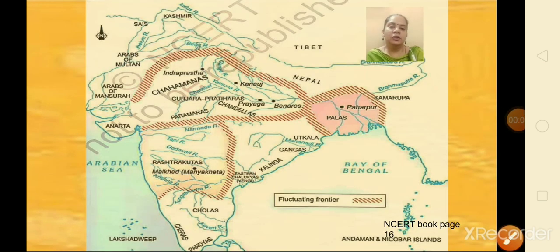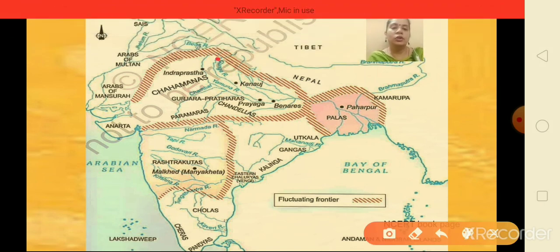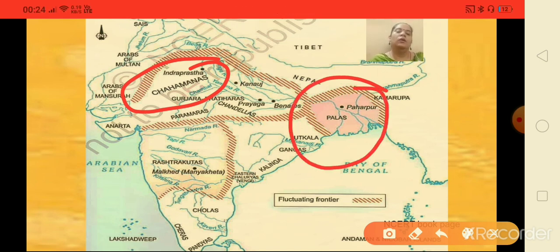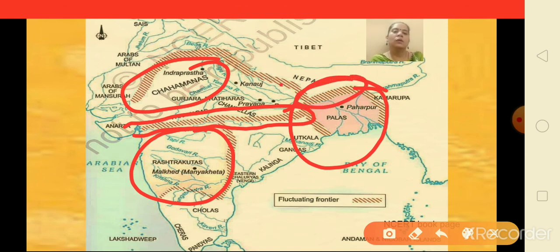This picture shows the fluctuating frontiers of those dynasties and rulers. The upper portion represents the Chahamanas, then we have the Palas, and also the Rastrakuttas. The highlighted portion indicates their fluctuating frontier.